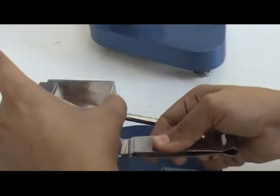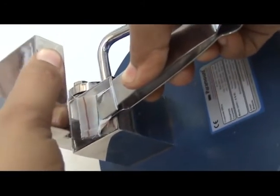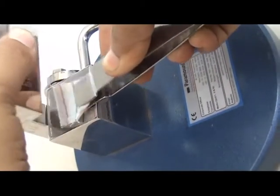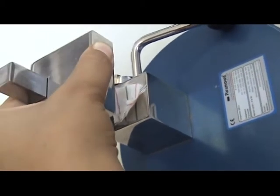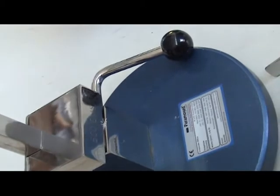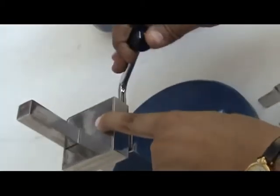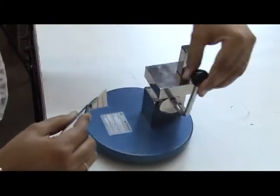The folded specimens are placed on the loading device and allowed to develop the crease under a load of 2 kg for 1 minute. The weight is removed and the sample is placed with the help of forceps in the clamp.